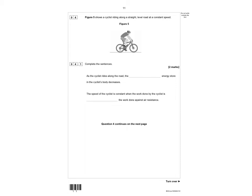Complete the sentences. As the cyclist rides along the road, the something energy store in the cyclist's body decreases. The speed of the cyclist is constant when the work done by the cyclist is something the work done against air resistance.